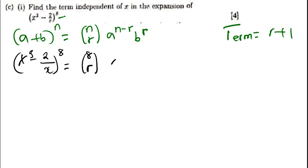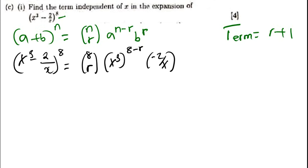a is x to the power 3. Put them in the brackets: n is 8, r we don't know. What is my b? My b is negative 2 over x raised to the power r. Our goal first is to find r. When we find r, it's going to be easy for us to find the term.